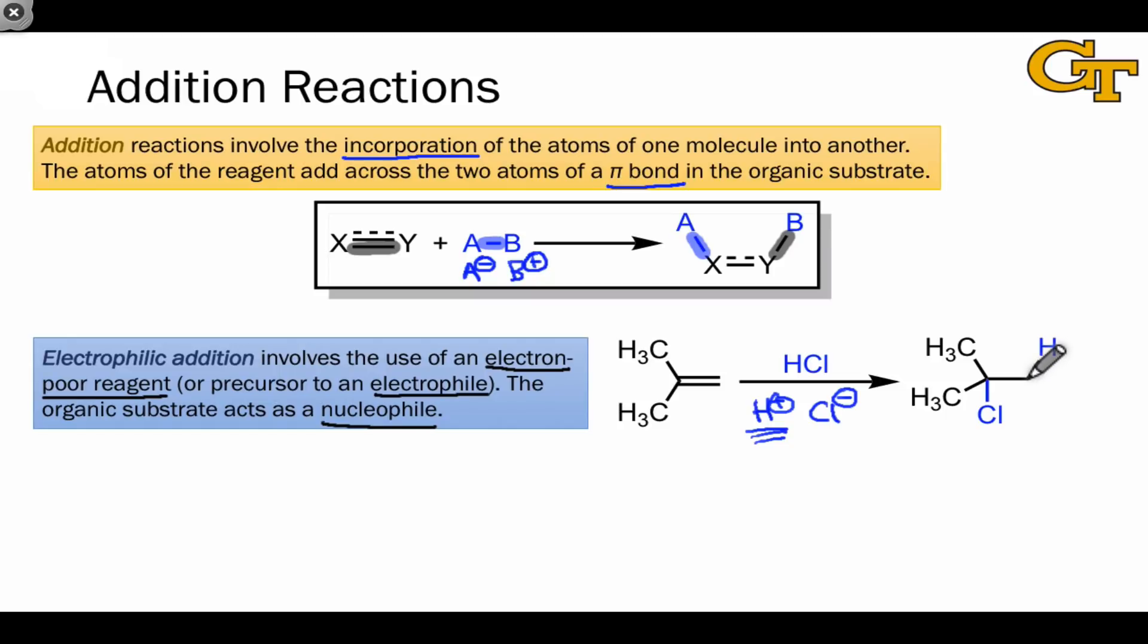Notice here again the somewhat subtle but very important point that the electrons in the CH bond came from the alkene, not from the reagent.